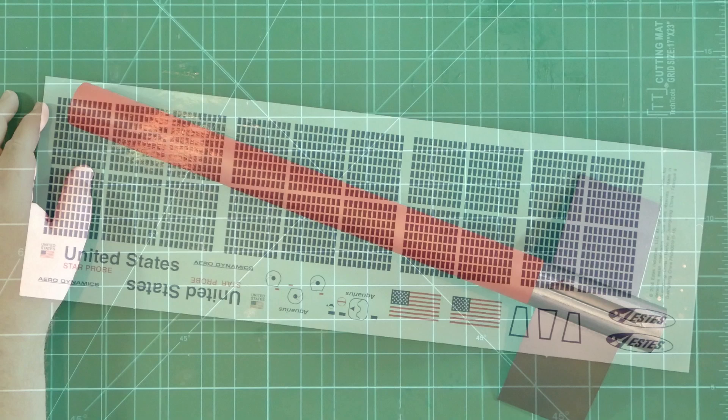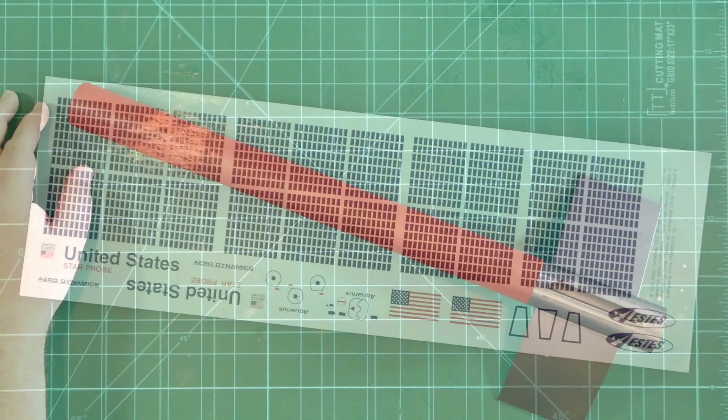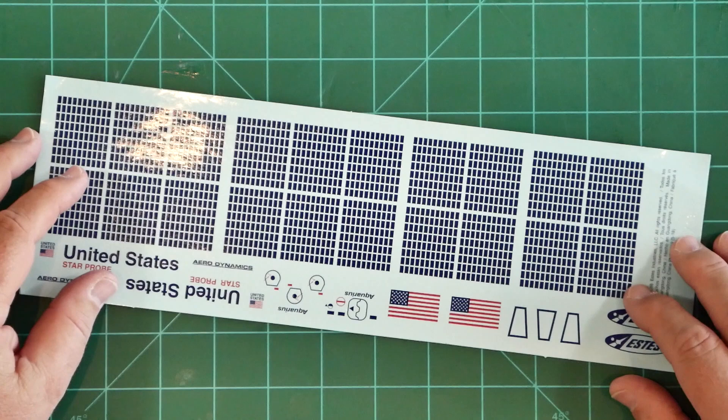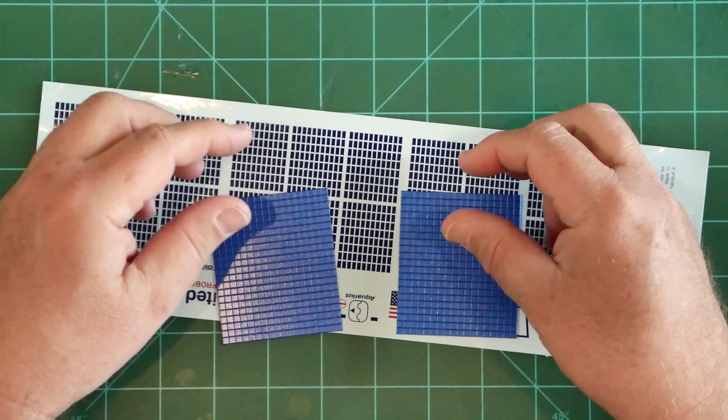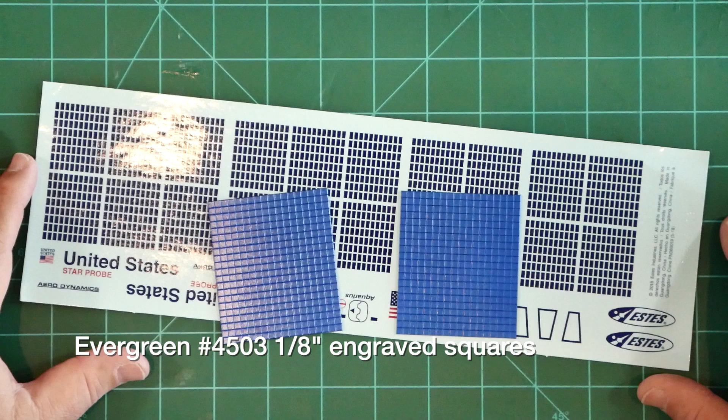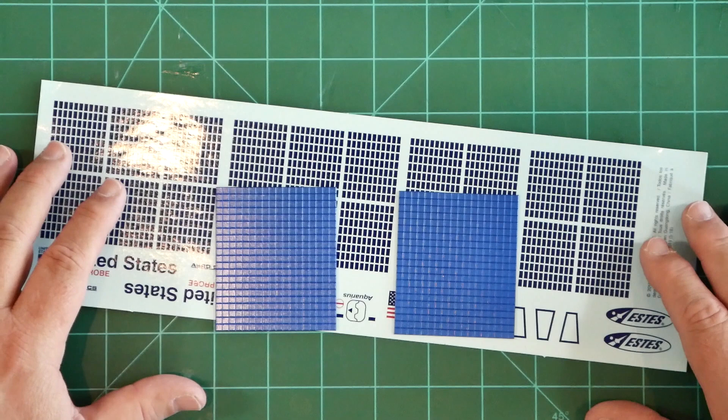The original kit decals feature some simulated solar panels that are designed to be applied to the fins. Rather than use these, we can use pieces of styrene sheet that have been pre-engraved with a 1/8 inch square pattern. We've already cut these new solar panels to size and painted them with metallic blue lacquer. There's still something missing though. These panels are simply too clean and too monolithic. There's a quick and easy fix to that though.